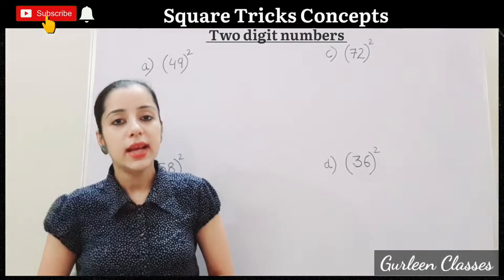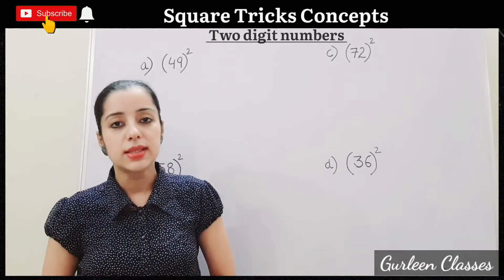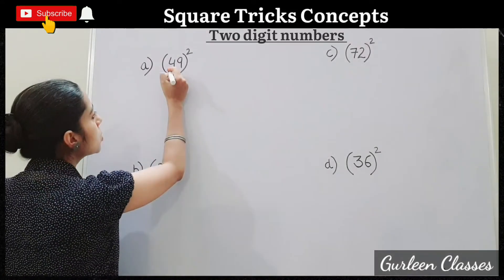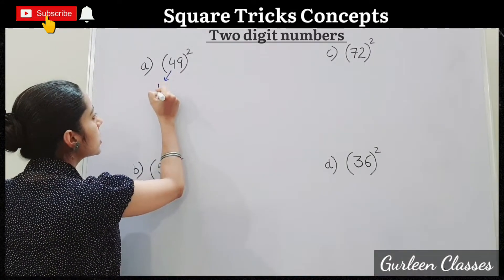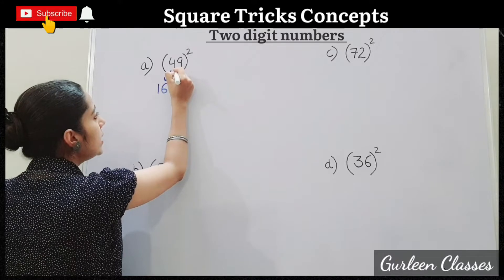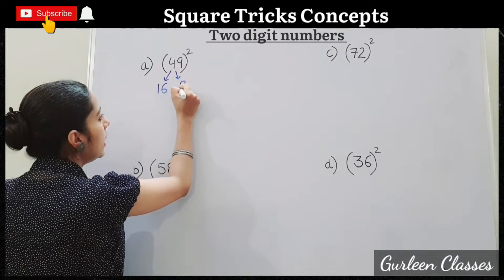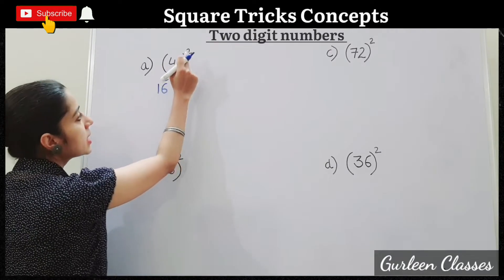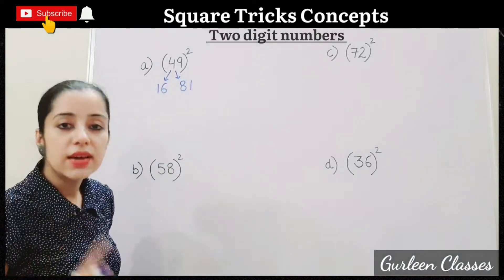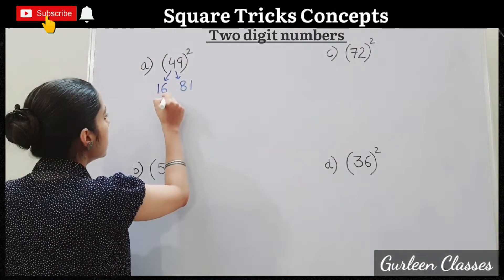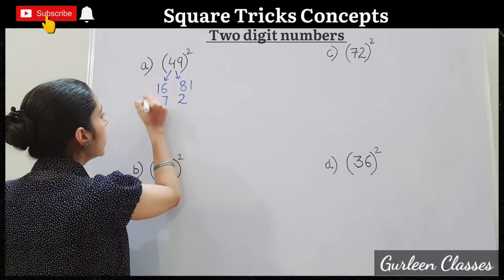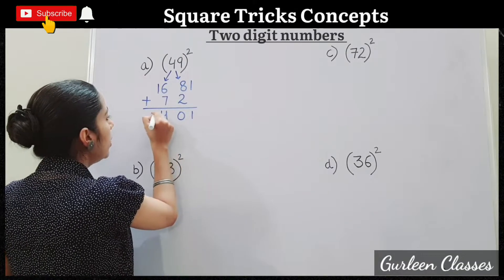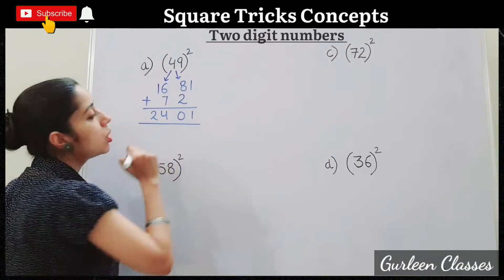So let us start finding out squares for 2-digit numbers. A. 49 square. So let us find out 4 square will be 4 fours are 16. 9 square, 9 nines are 81. Second step, multiply 4 into 9, 36. 36 into 2, 72. So write here 7 and 2. Third step we will add. So 1, 0, 14 and 2. Answer is 2,401.